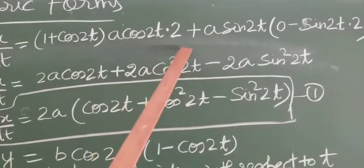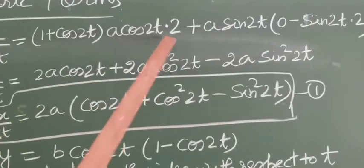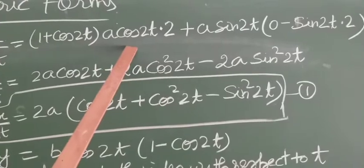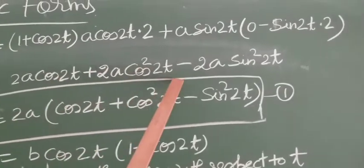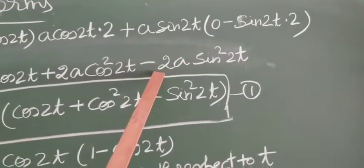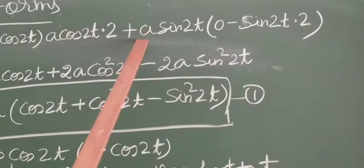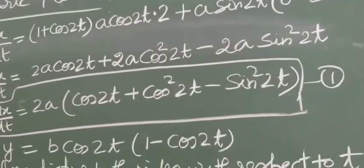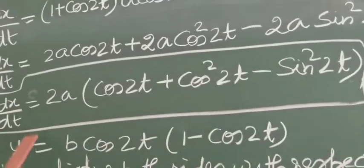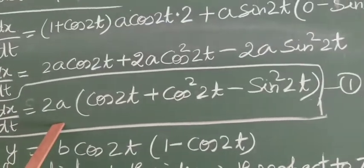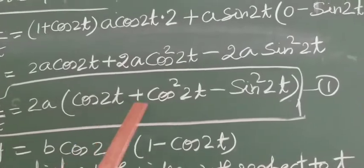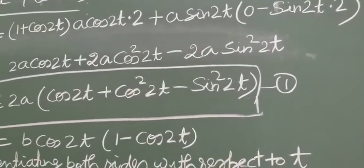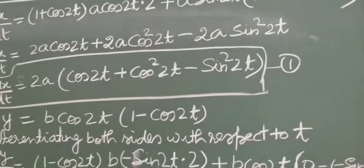Opening the brackets: dx/dt equals 2a·cos2t plus 2a·cos²2t minus 2a·sin²2t. Taking 2a common: dx/dt equals 2a·(cos2t + cos²2t − sin²2t). This is equation number 1.